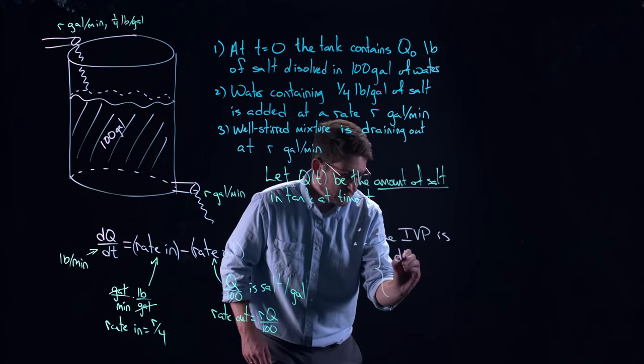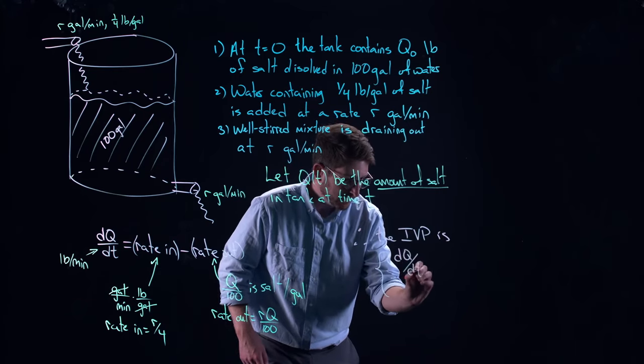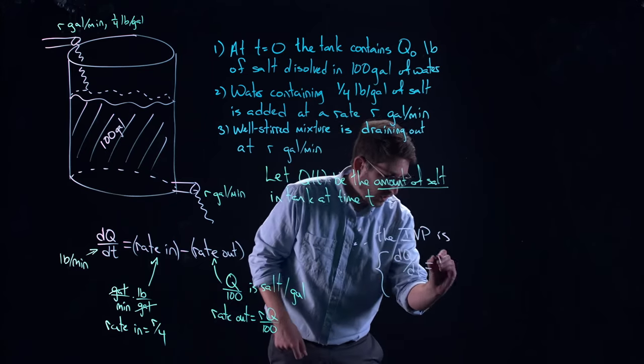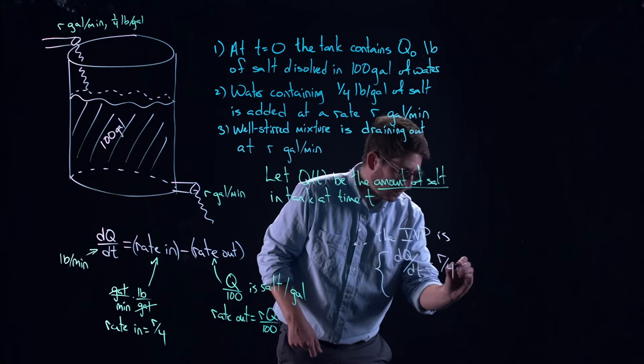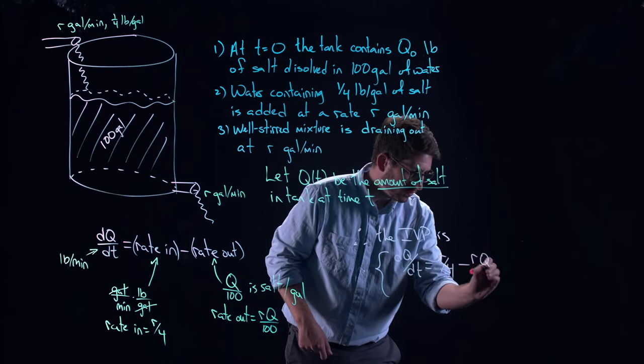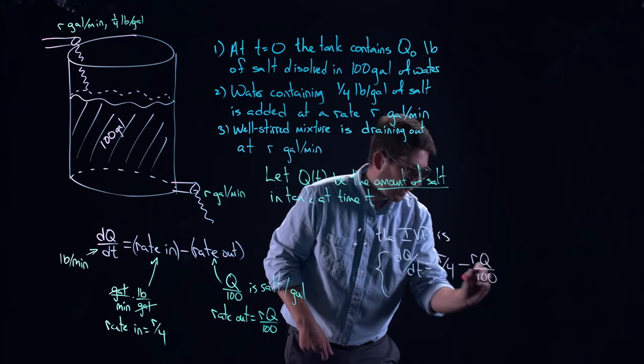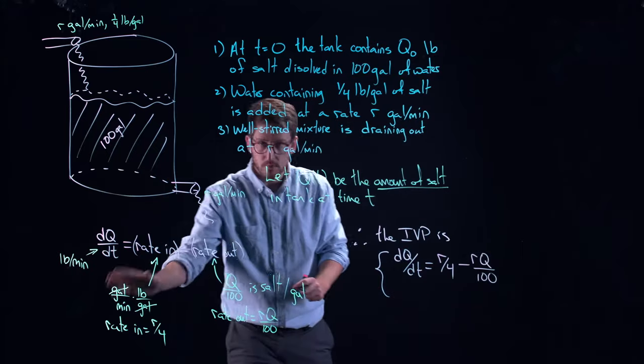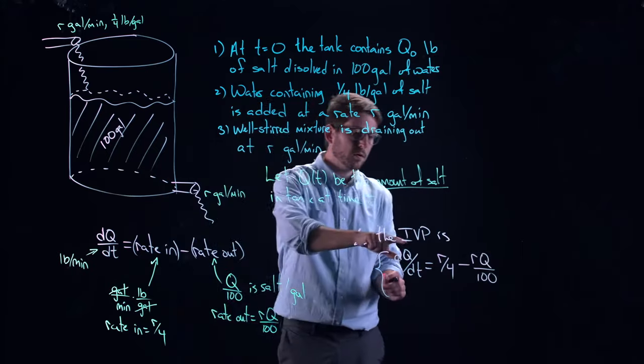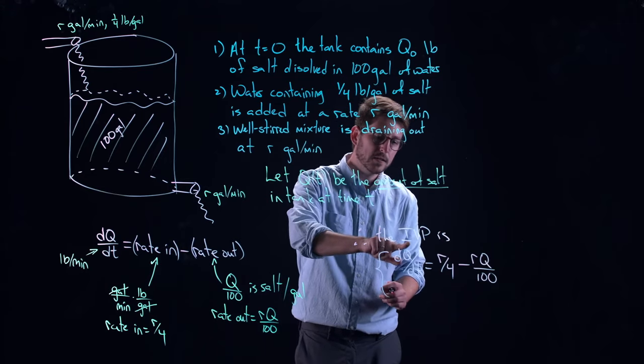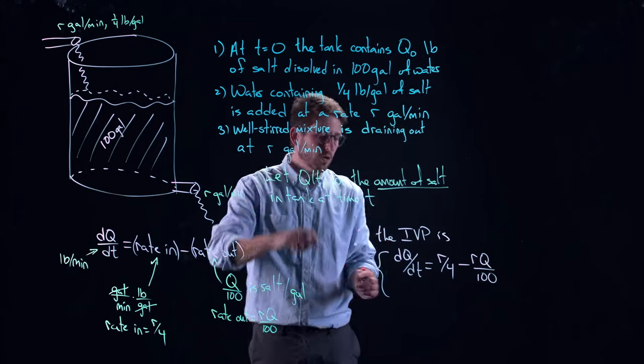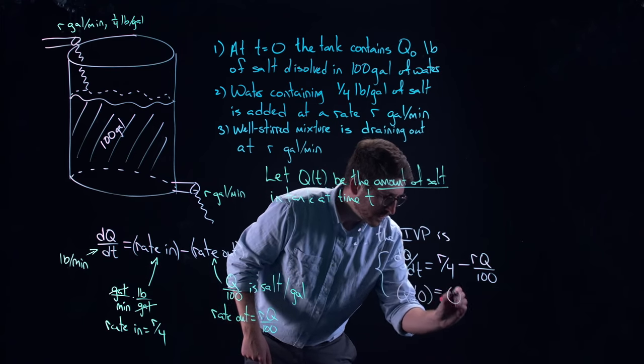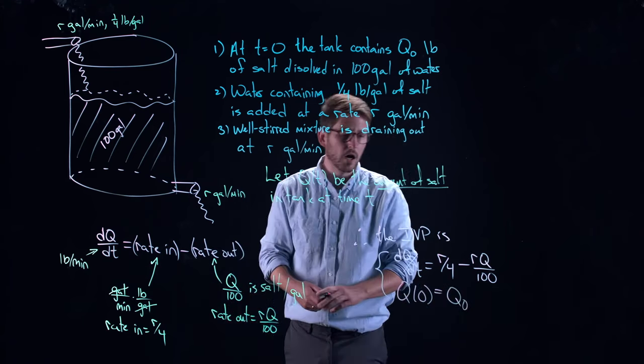I've got DQ DT, rate in minus rate out. R over four minus RQ over a hundred. Rate in minus rate out. That's what we just derived here. Remember IVP stands for initial. So our initial value is Q of zero is equal to Q naught.